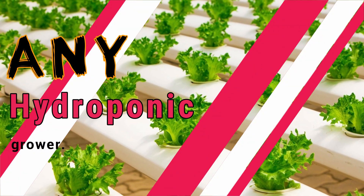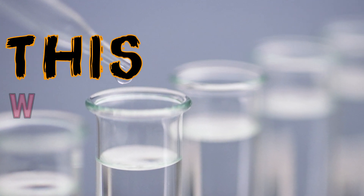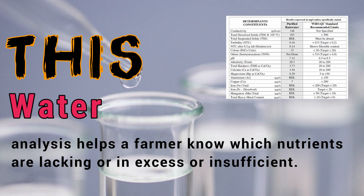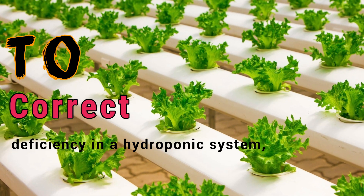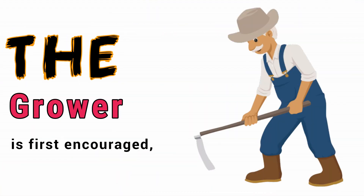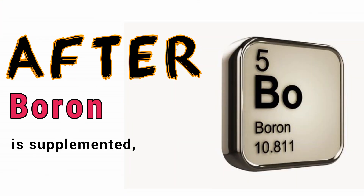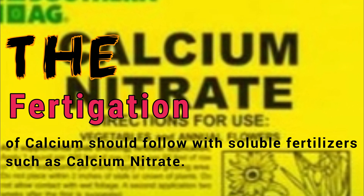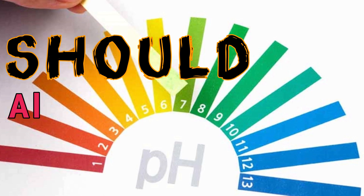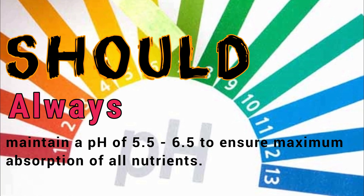Calcium deficiency is easy to correct in hydroponic systems. Any hydroponic grower must have a comprehensive water analysis carried out before production begins. This water analysis helps a farmer know which nutrients are lacking, in excess, or insufficient. To correct calcium deficiency in a hydroponic system, the grower is first encouraged to feed the crops with boron supplements such as boric acid granules, which have to be dissolved in water. After boron is supplemented, fertigation of calcium should follow with soluble fertilizers such as calcium nitrate. The hydroponic grower should always maintain a pH of 5.5 to 6.5 to ensure maximum absorption of all nutrients.